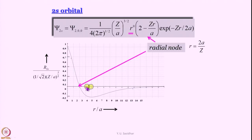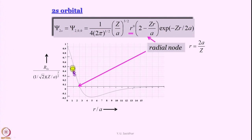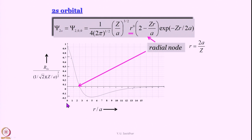What about 2s? The 2s orbital has r^l × (Laguerre function), where l = 0, so r⁰ = 1. The Laguerre function is (2 − Zr/a), where a is the Bohr radius. The radial node occurs at r = 2a/Z — the function falls off, becomes 0 at r = 2a/Z, and changes sign. Remember, a node is a point where the wave function goes to 0 and changes sign; if it does not change sign, it is not a node. Then the function increases again and becomes 0 asymptotically. This is your 2s orbital.